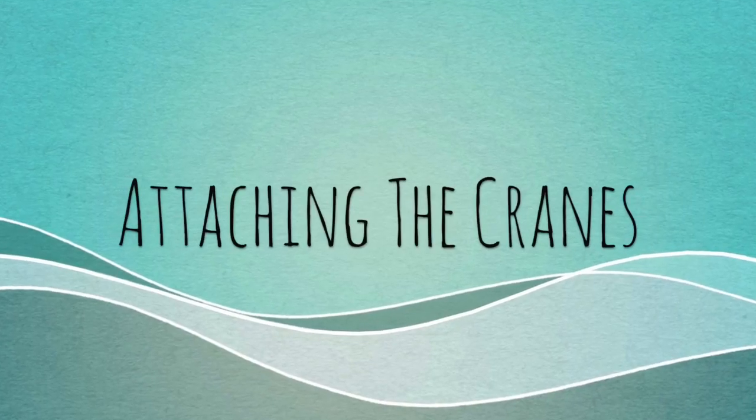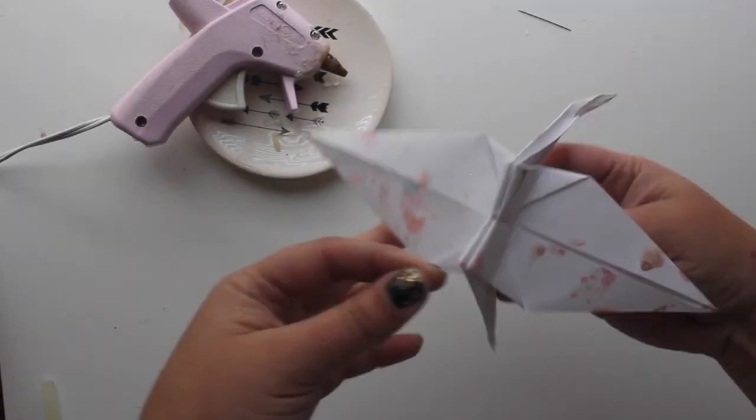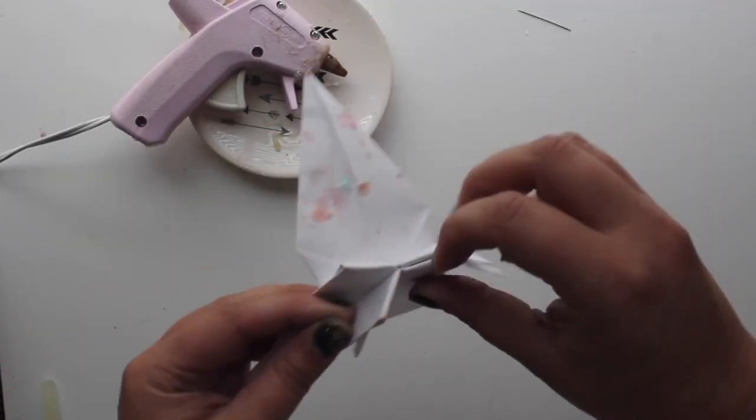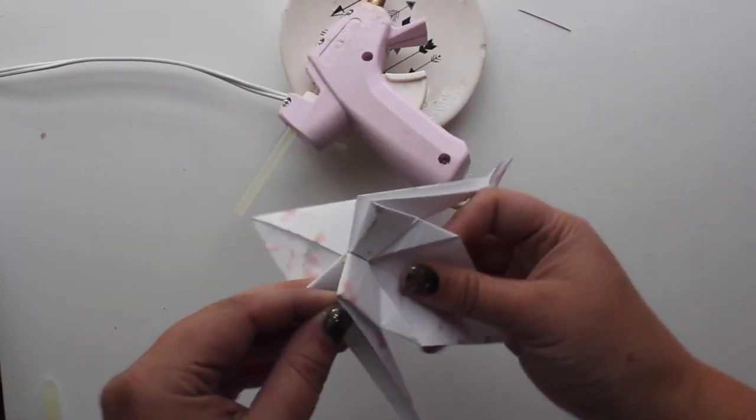These look so beautiful when they catch the light. Now we can attach the cranes. I am using clear thread, so they appear to be floating. Add a tiny dab of hot glue at the bottom of the crane, in between the folds. Stick one end of the clear thread in it.